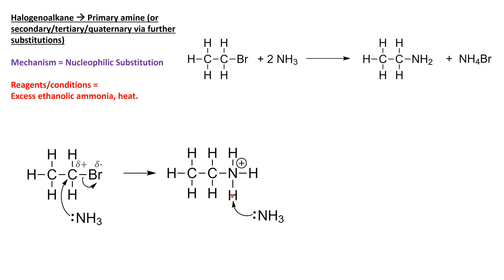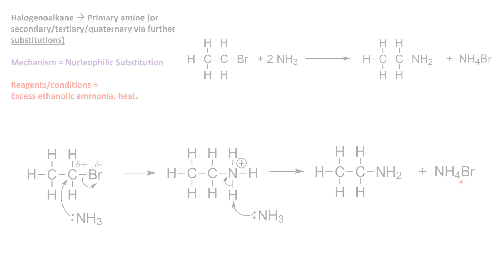That hydrogen is going to give its electrons back to the nitrogen, getting rid of that charge. Therefore we get our primary amine product, but because this one's grabbed a hydrogen, that becomes NH4 and it's going to pair up with that bromine from earlier, so we're going to get ammonium bromide as our byproduct.